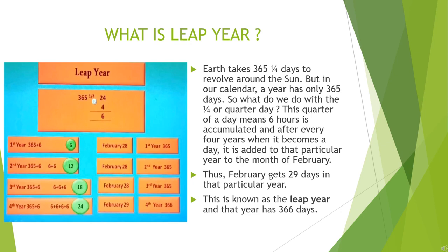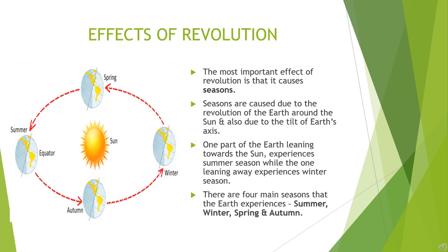I hope I have been able to make the concept of leap year clear to all of you. Now let us know what are the effects of revolution. The most important effect of revolution is that it causes seasons. Seasons are caused due to the revolution of the earth around the sun and also due to the tilt of the earth's axis. One part of the earth leaning towards the sun experiences summer season while the one leaning away experiences winter season. Therefore, there are four main seasons that the earth experiences: summer, winter, spring, and autumn.